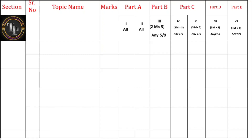Part C belongs to three-mark questions and is divided into two parts this year. Roman number four covers three-mark questions from physical chemistry — five questions are given, you answer any three, giving 15 marks. Roman number five covers three-mark questions from inorganic chemistry — six questions are given and you answer any three.